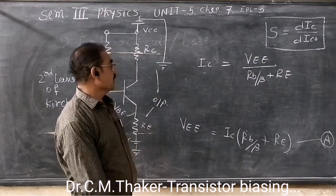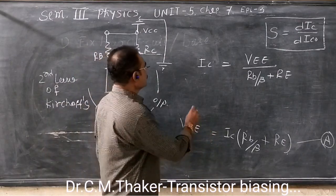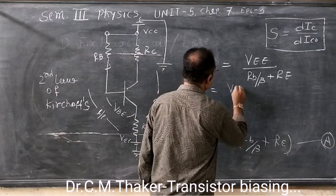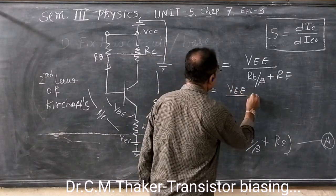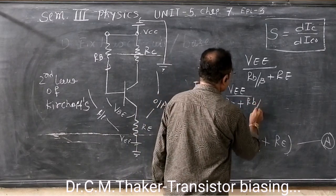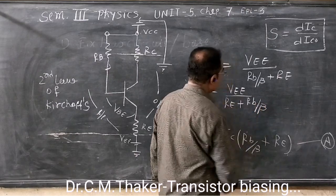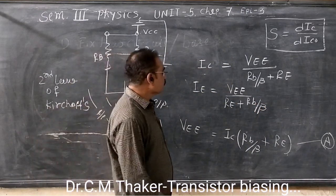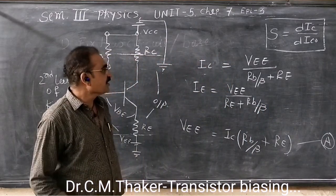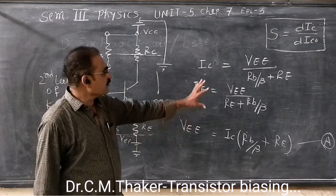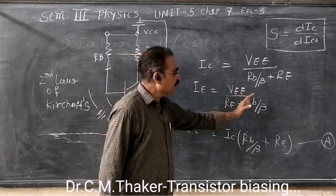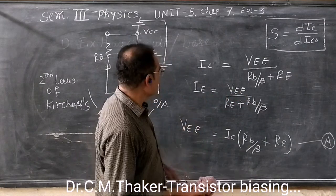IC is equal to VEE upon RB upon beta plus RE. Now IE is almost equal to IC. So let us write IE is equal to VEE upon RB upon beta plus RE. Now beta is here. That means IC directly omitted from these equations. That means this circuit cannot depend directly on IC. This is the big advantage.